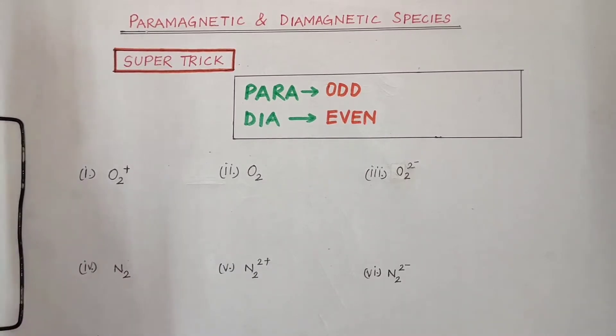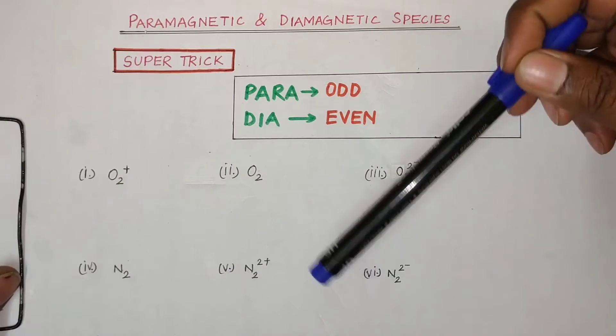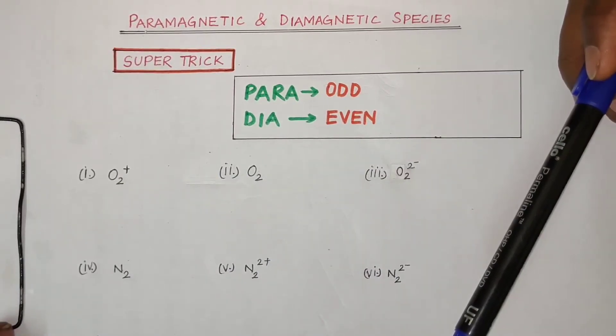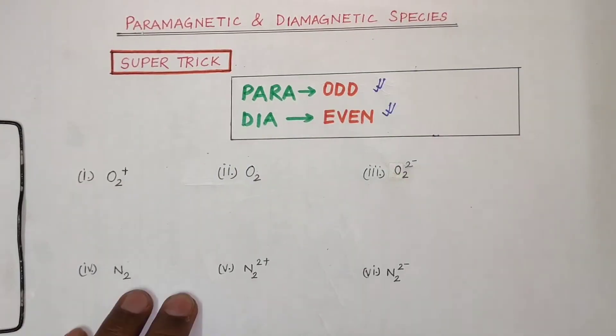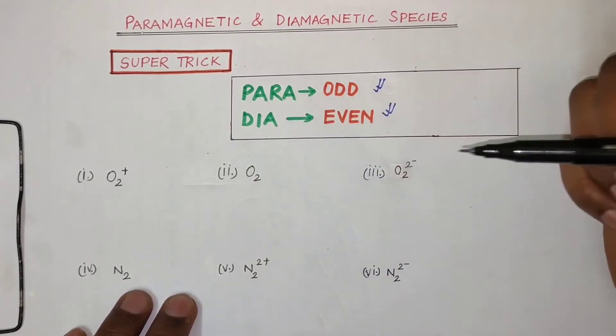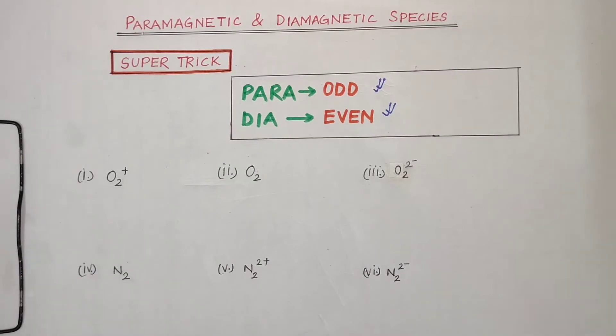So let's start the video. In this super trick we can count total number of electrons and we can also tell whether a species is paramagnetic or diamagnetic. So total number of electrons, if a species is odd then it is paramagnetic, or even and diamagnetic.